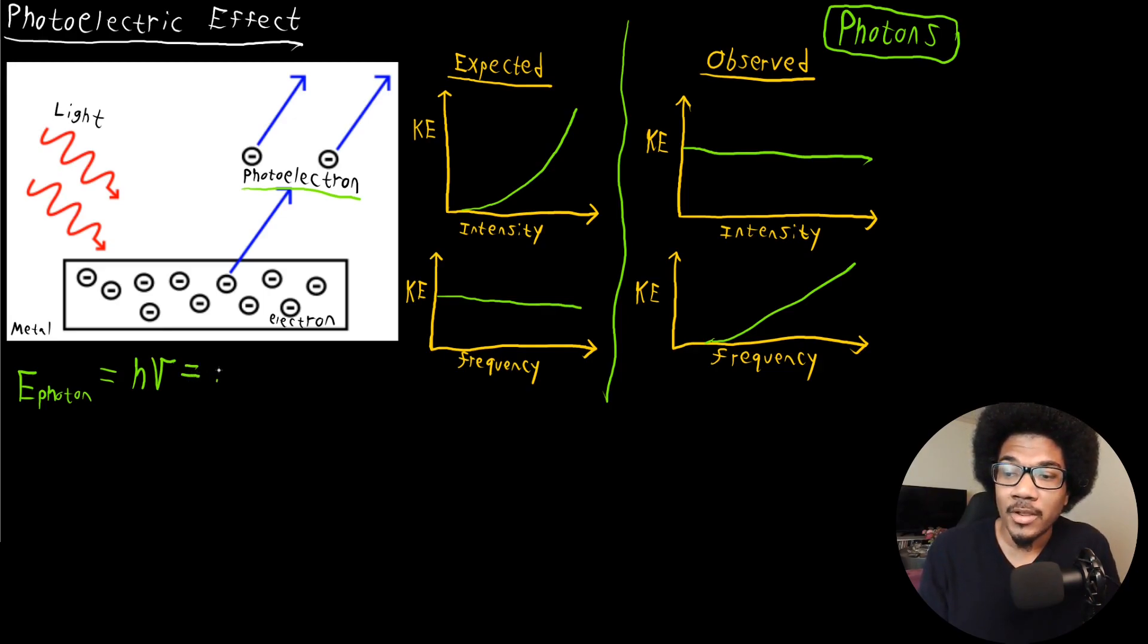Now, we can re-express this in terms of the wavelength of radiation by plugging in a definition of the frequency as C over lambda. And so that gives us this energy of the photon that is not dependent on intensity, is dependent on the frequency or wavelength of the radiation.